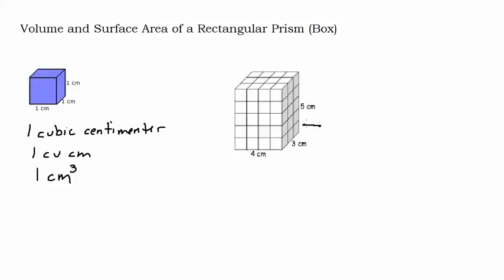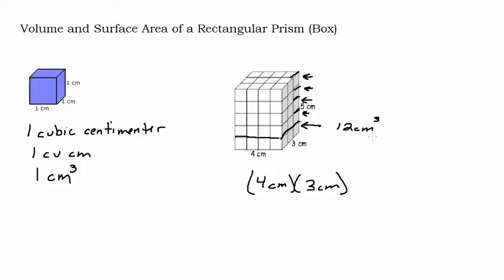Let's think about this lower level here. If I was just going to build this lower level, how many cubes would I need? It's four by three, so I would need 12 cubic centimeters just to build that lower level. Then I'd need 12 more cubic centimeters to do the next level, and 12 more to do the next — I'm stacking them. So basically I would need 12 cubic centimeters times five. We can also think of that as four centimeters times three centimeters, which gives me my 12 for the bottom, and then multiply that by five for my height, and I end up with 60 cubic centimeters. That is the volume.